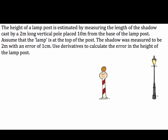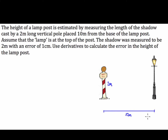The height of a lamp post is estimated by measuring the length of the shadow cast by a 2 metre long vertical pole placed 10 metres from the base of the lamp post. So we know that this length here is going to be 10 metres, and the pole we've put in is going to be 2 metres high. The shadow was measured to be 2 metres with an error of 1 centimetre.